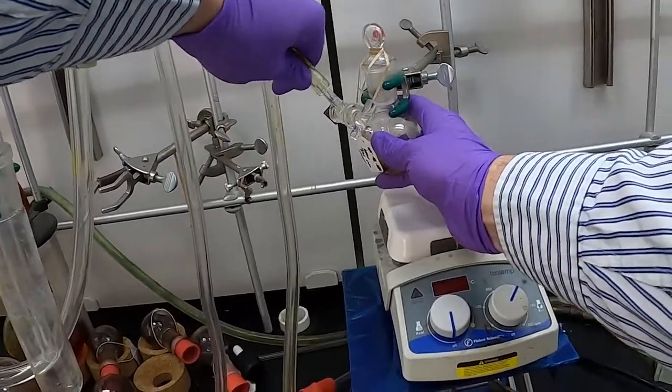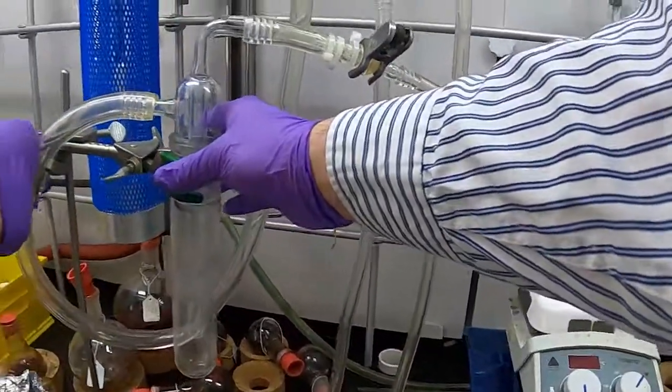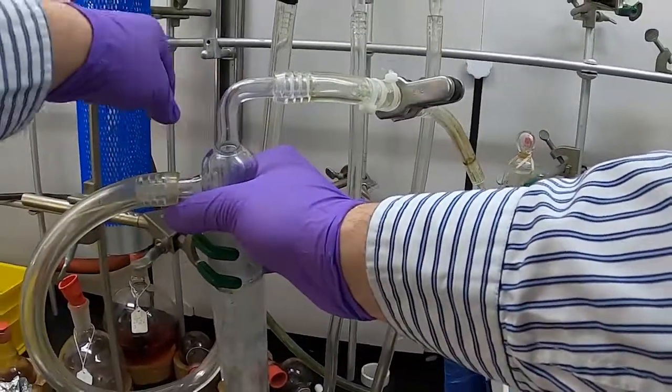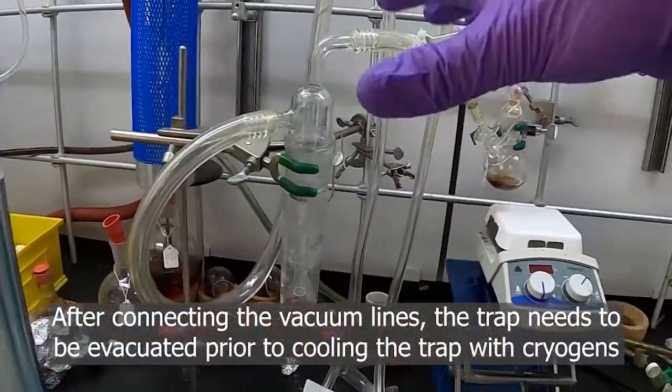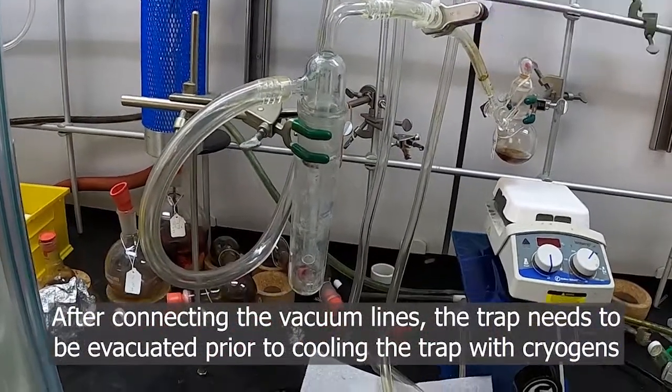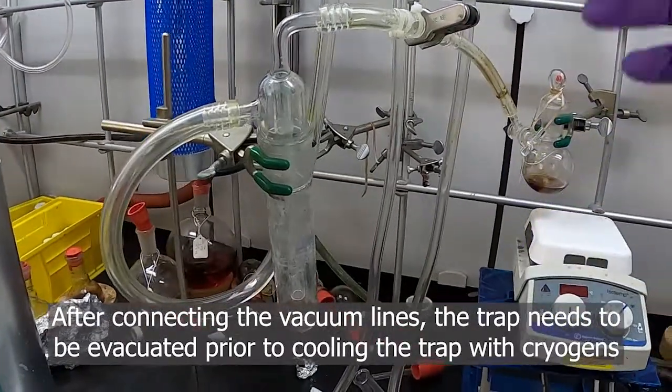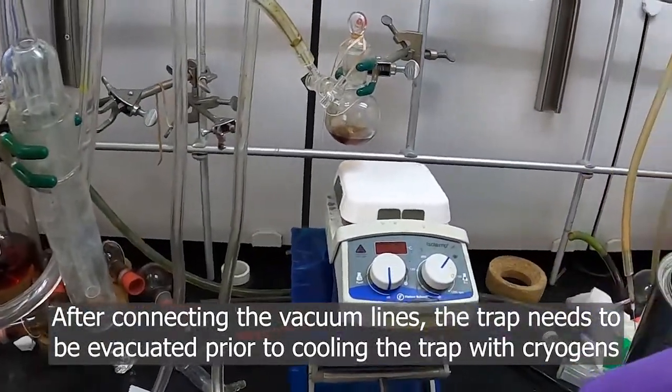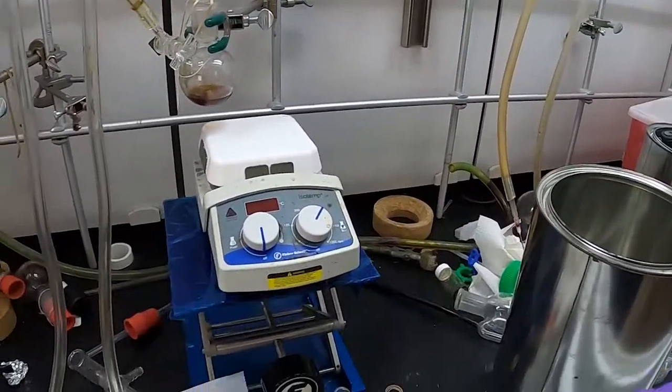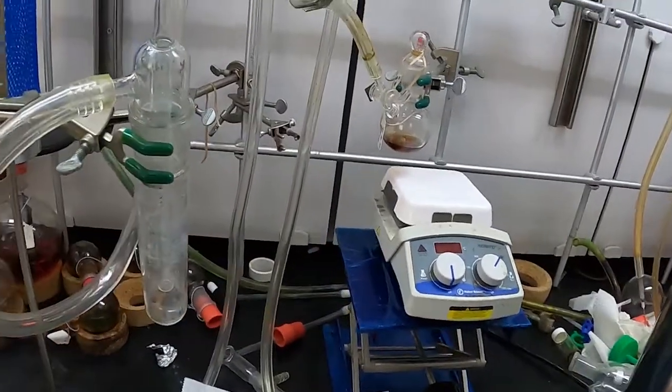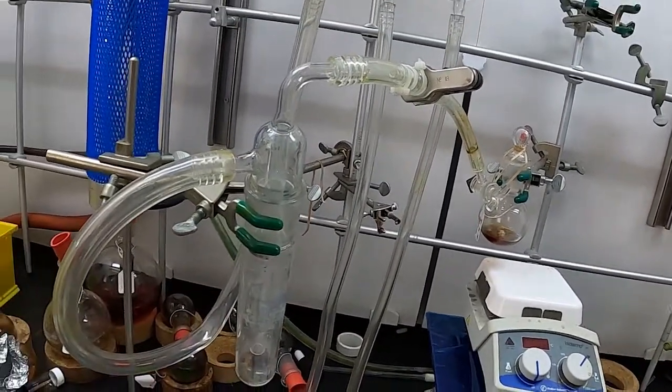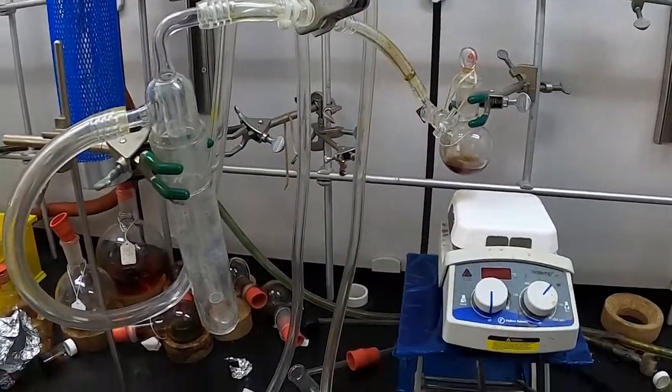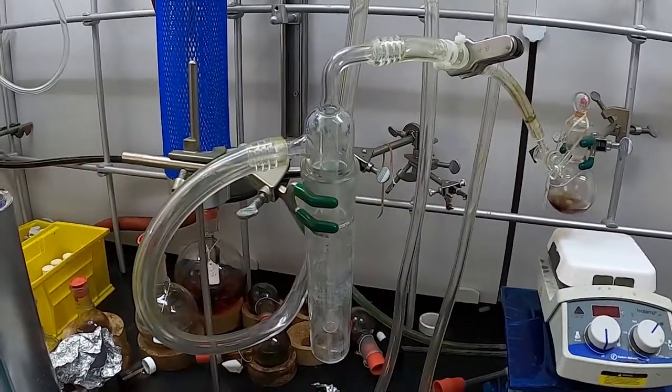The first thing we want to do is start by evacuating our trap. We want to get all the air out of this so we don't end up condensing liquid oxygen at all when we put this under a cryogen. We then open our vacuum pump here. You can hear the vacuum evacuating this whole trap setup, and we let that gurgle for a couple seconds.